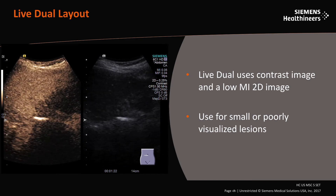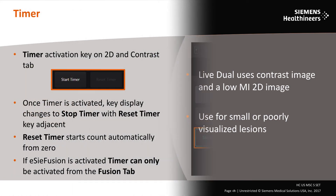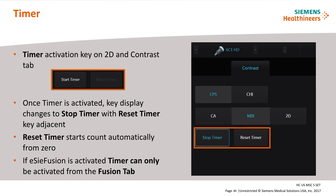The timer control key is located on both the 2D and contrast tabs. To activate, select start timer — the display will change to stop timer, and the reset timer key will illuminate beside it. To stop the timer, select stop timer; the time clock will remain on the image screen and display the stop time. Selecting reset timer will set the timer back to zero and automatically start the active time clock count again. Use the reset timer for continuous flow state contrast exams to time and view contrast reperfusion in a region of interest. Note that if EC fusion is activated, the timer can only be activated from the fusion tab.